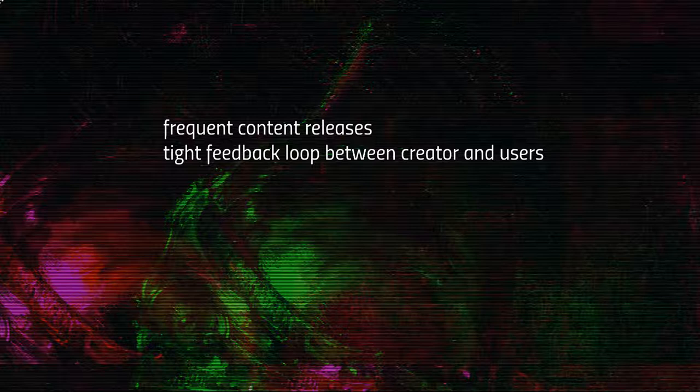This is what frequent content releases actually stands for. Each new release allows you to establish a feedback loop with your users, and the higher the frequency of that feedback — the more often you get it — the higher the chance you're doing things right. Conversely, if you have a schedule releasing once a month or once every two or three weeks, you have very few chances to correct issues and gather feedback. Always go for frequent content releases and aim for tight feedback loops with your audience.